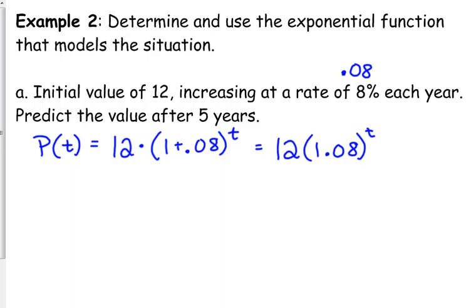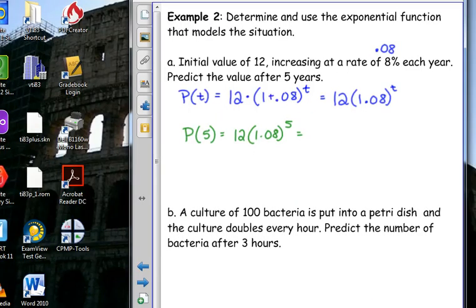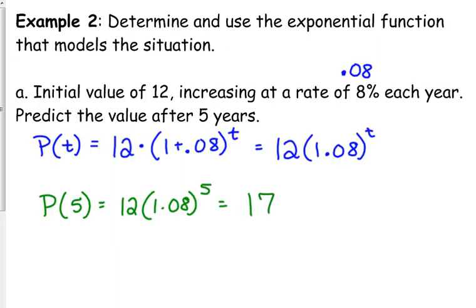And to predict the value after five years, all we are doing is plugging in 5 in function notation. That would be P of 5, the population at time 5 is 12 times 1.08 to the 5th. So, after five years, our population has grown to 17.63. Approximately. We don't know what the population is. So, we really can't put any units on there. Could be people, could be bacteria. Oh, not bacteria. Bacteria goes faster than that. But, some type of animal, who knows.